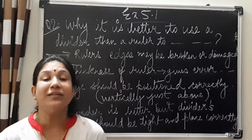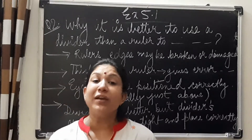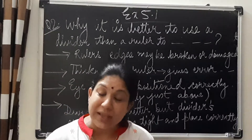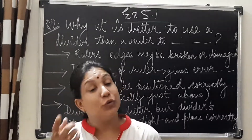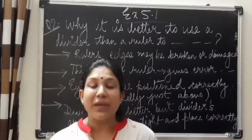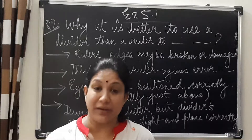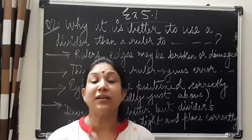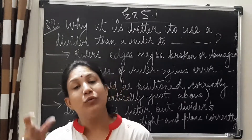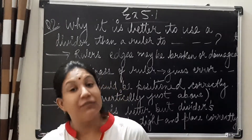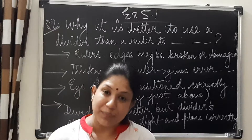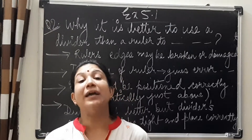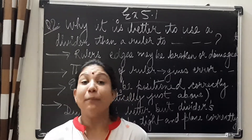So we see that when we compare two line segments using a ruler, we may get more errors as compared to using a divider for comparing or measuring line segments.